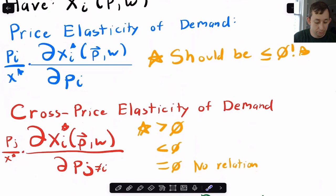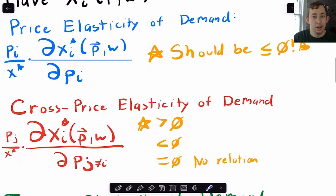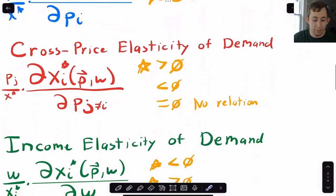So for example, price elasticity of demand, if it's an ordinary good, we should get a negative number. For cross-price elasticity of demand, if we get a positive number, that means, for example, if the price of the other good goes up, then the demand for the original good also goes up, which must mean they're substitutes. And if it is negative, they must be complements. So I cover that in a different video.